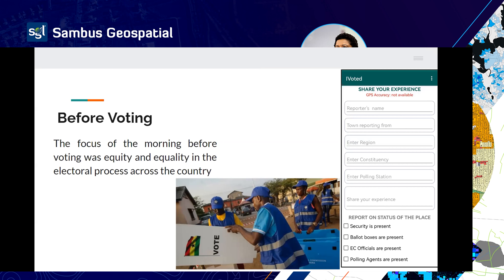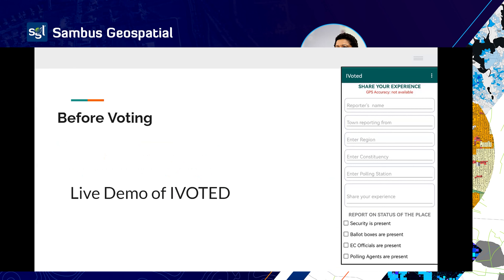With this information, we were able to have an idea about what was happening in the various polling stations. The app allowed you to scroll and provide pictures of whatever was happening at the polling station. When you share the information, the location from which the data was coming automatically comes from the app as well. I'm going to show a live demo of the iVoted.